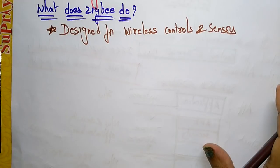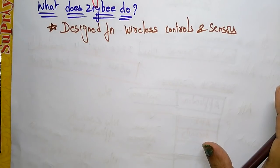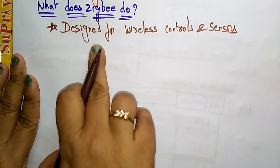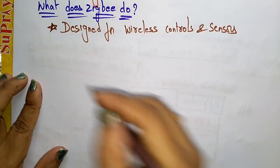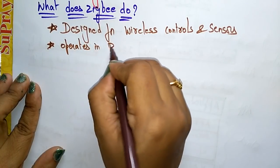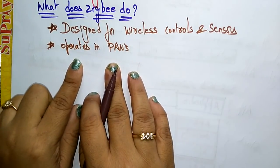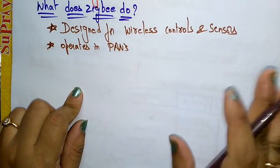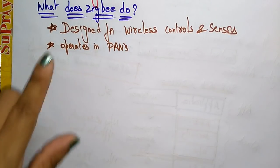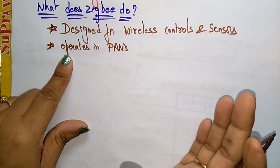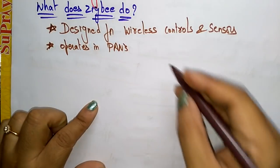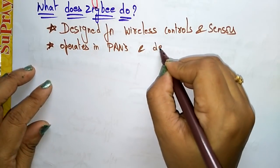So wherever you want remote accessing without wires, in those situations we can use ZigBee. It operates in a personal area network. One important thing is it can operate only in personal area networks, not in wide area networks or metropolitan area networks. So it can operate only within a distance — within a room or within a house.